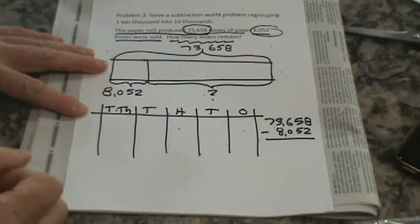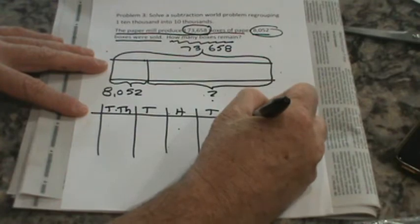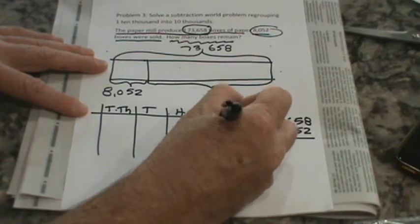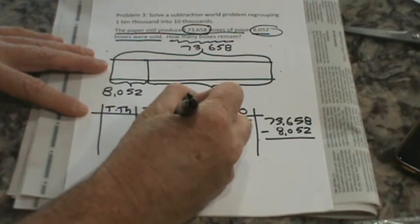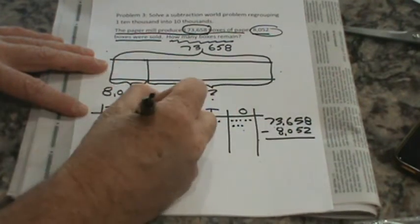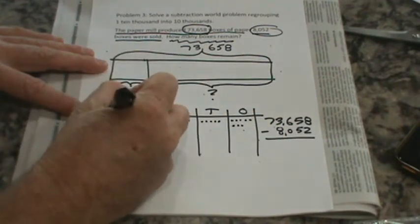Okay, so we have eight ones, five tens, six hundreds, oh excuse me only three thousands, and seven ten thousands.